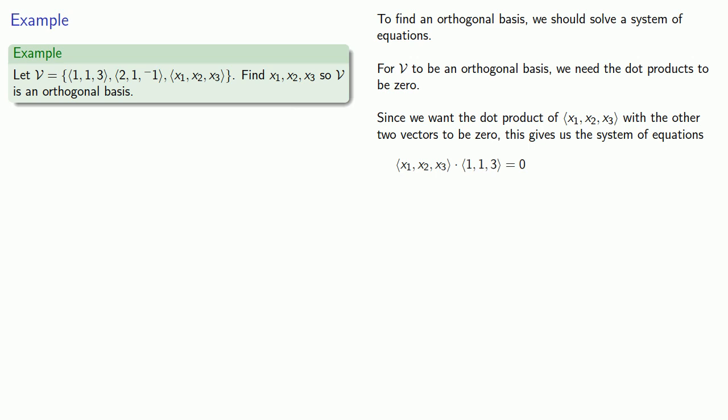Well that gives us the equation 1x1 + 1x2 + 3x3 = 0. I also want to make sure that the dot product of (x1, x2, x3) with the other vector (2,1,-1) is also 0. And so that gives me 2x1 + 1x2 + (-1)x3 = 0.